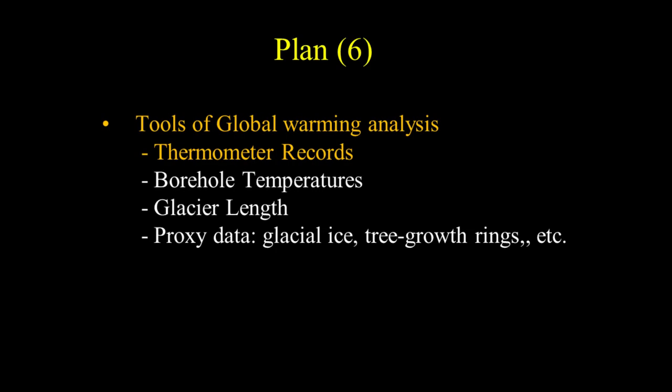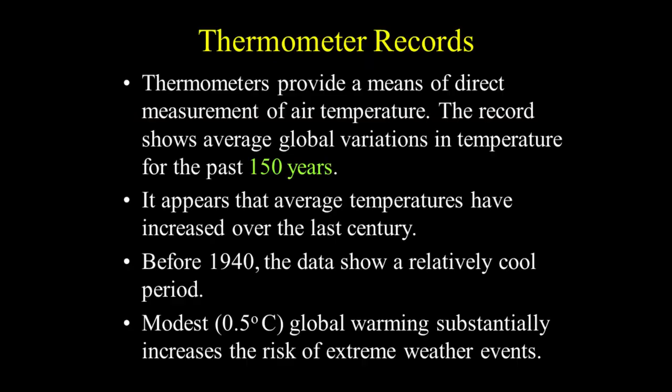Let's review the tools that allow us to provide information on past temperatures, starting with the thermometer. Thermometers provide a means of direct measurement of air temperature. The record shows average global variations in temperature for the past 150 years. It appears that average temperatures have increased over the last century.